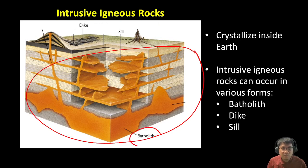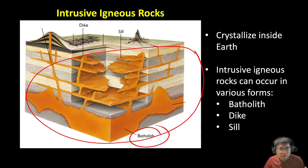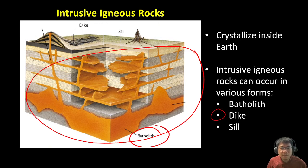The first structure is a batholith. You can imagine a batholith as a magma chamber — a very huge body of igneous rock that forms inside the earth. The second one is called a dike. A dike is a body of igneous rock that cuts across layers of sedimentary rocks. Here are different dikes right here.